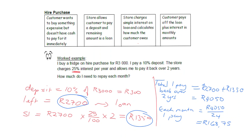You can also figure out the total you actually paid for the fridge: the 300 deposit plus the monthly payments (168.75 times 24 = 4,050) gives a grand total of 4,350 rand for a fridge that would have cost 3,000 cash — that's because you took a loan and get charged interest on it.